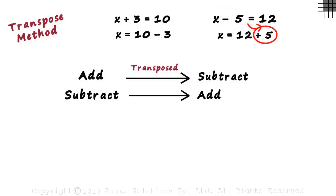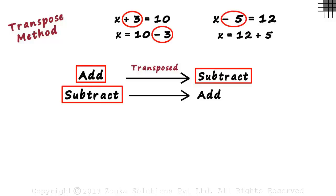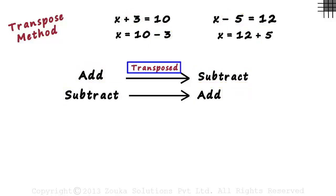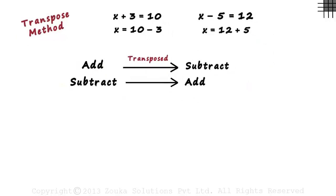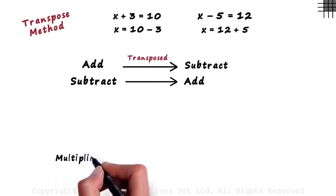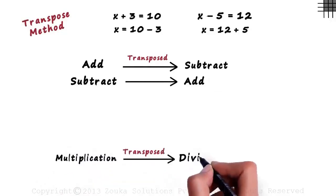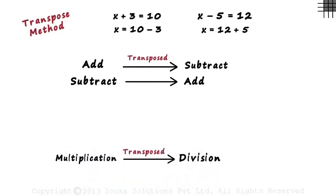This concept is valid for addition and subtraction of terms. When a term is transposed to the other side, addition becomes subtraction and subtraction becomes addition. Transpose basically means transferred. The concept is similar for multiplication and division: a term that is multiplied on one side is divided when transposed to the other side.